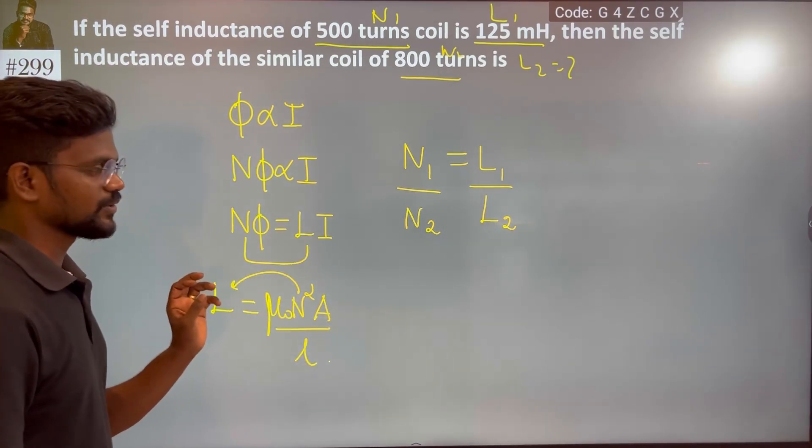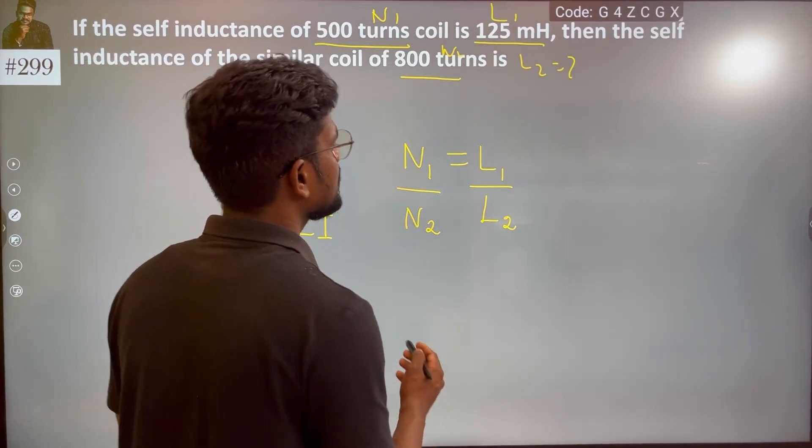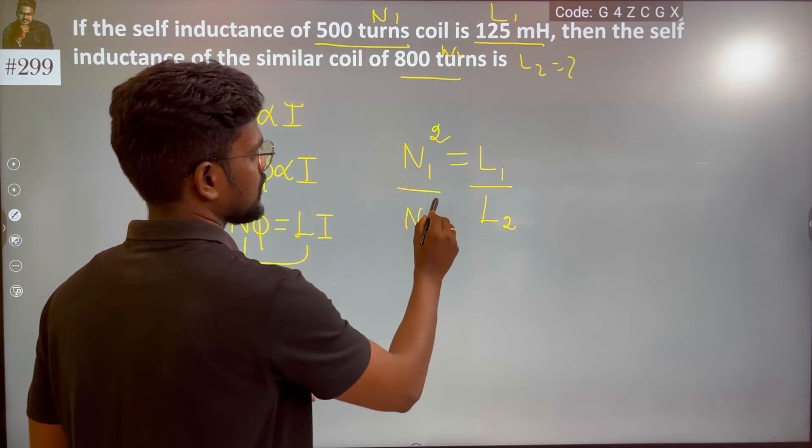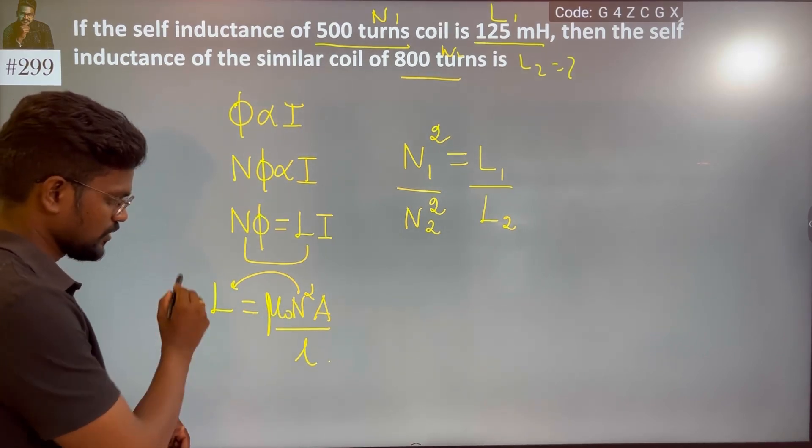So that's what we are trying to conclude here. This can be written like n square and n square. L is directly proportional to n square.